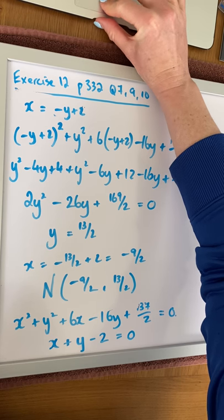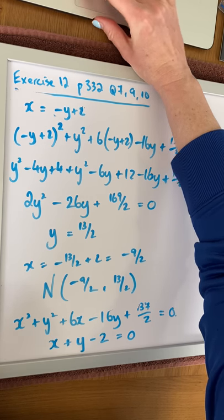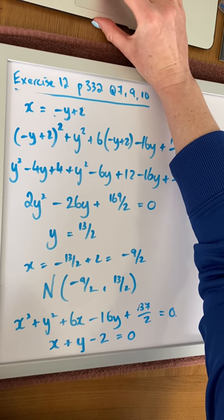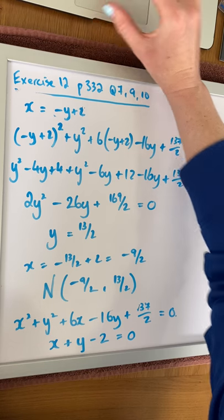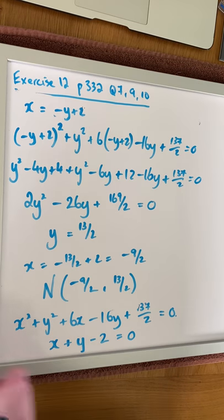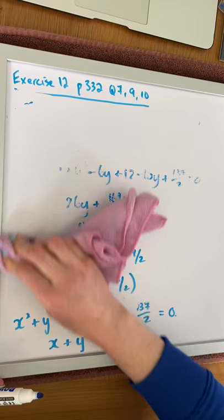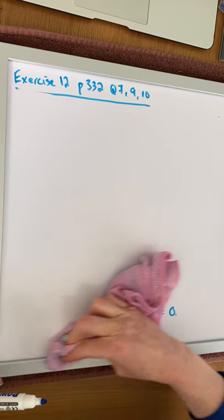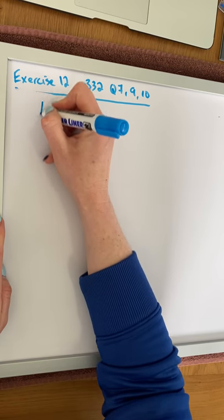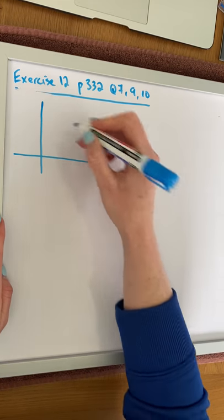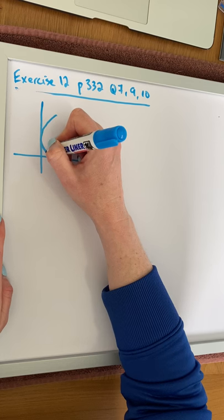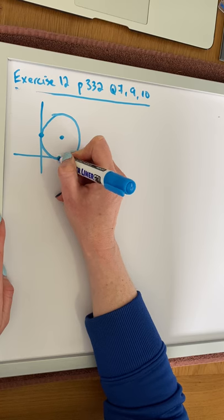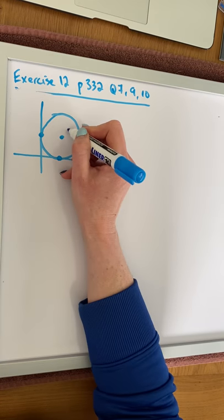In question 10, we are given the general equation of a circle. We are told that a circle has the equation x² + y² + 2gx + 2fy + c touches both axes in the first quadrant. If we look at our diagram, we're looking at a circle that touches both the axes. This is our touching point and this is our touching point, and we have the center c.